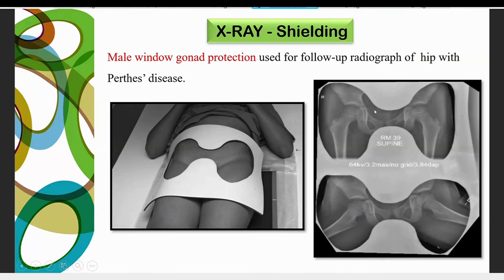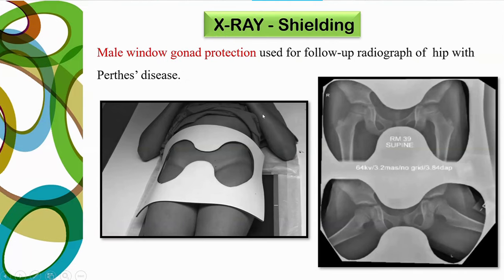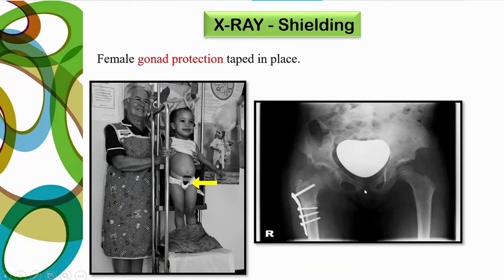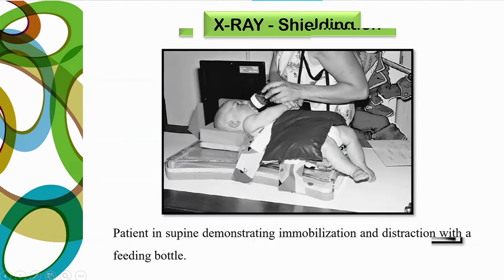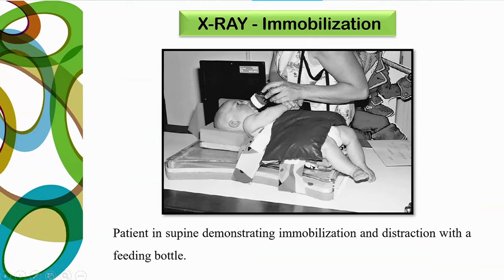Regarding shielding devices in X-ray procedures: a male gonad window shield can be used for hip radiography in developmental disease of a baby. A female gonad protection device is placed on the pediatric patient for imaging the hip in female patients.